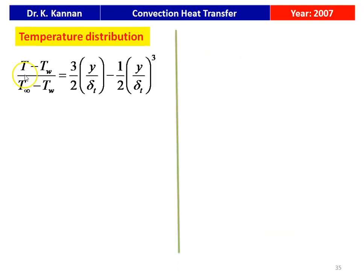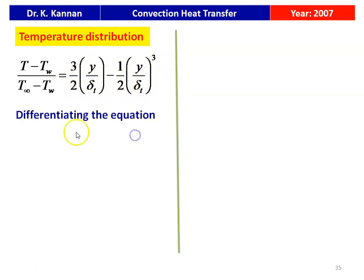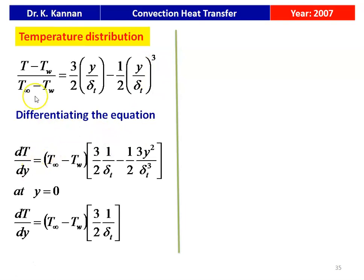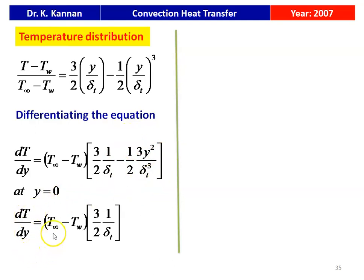The temperature profile is (T − T_w) / (T∞ − T_w) = (3/2)(y/δ_t) − (1/2)(y/δ_t)³. Differentiating with respect to y: dT/dy = (T∞ − T_w) × [(3/2)(1/δ_t) − (1/2)(3y²/δ_t³)]. At y = 0: dT/dy|_{y=0} = (T∞ − T_w) × (3/2)(1/δ_t).